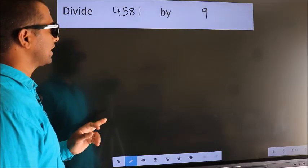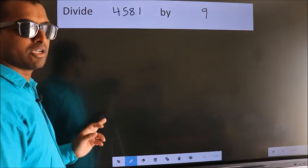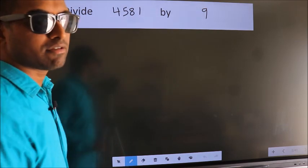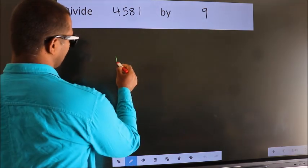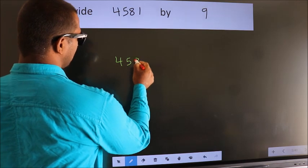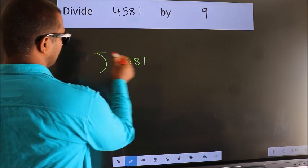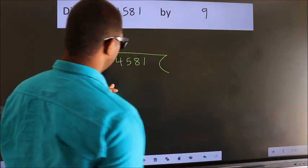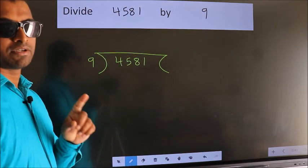Divide 4581 by 9. To do this division, we should frame it in this way. 4581 here, 9 here. This is your step 1.